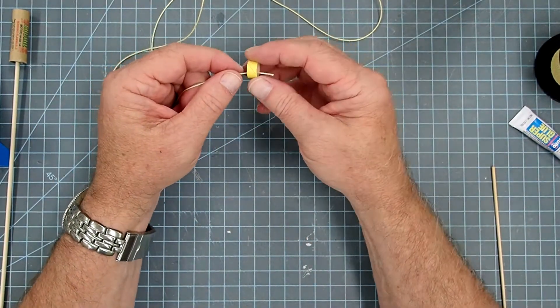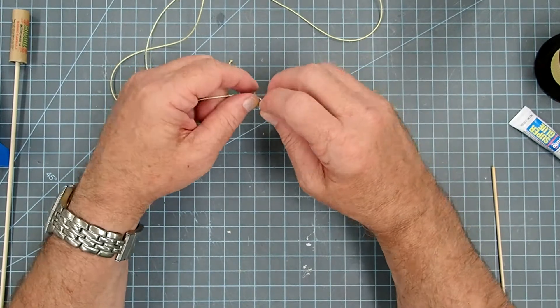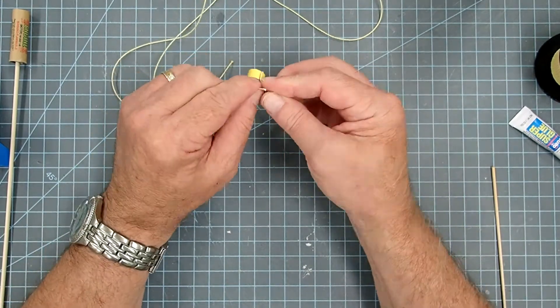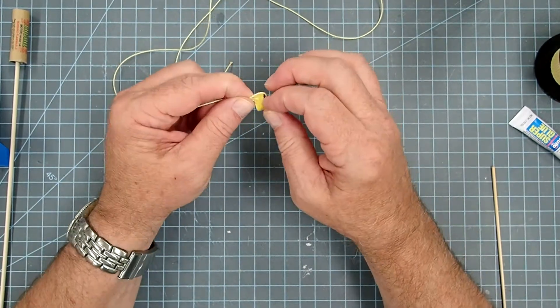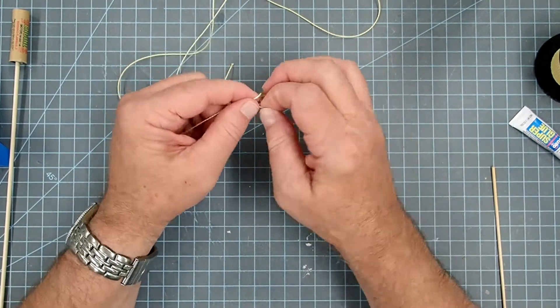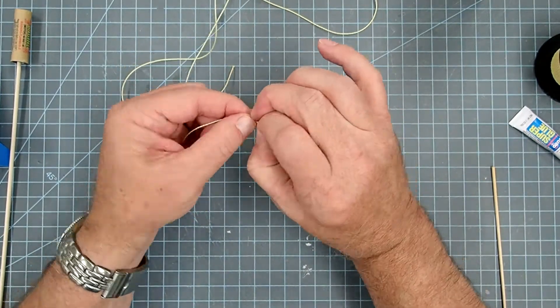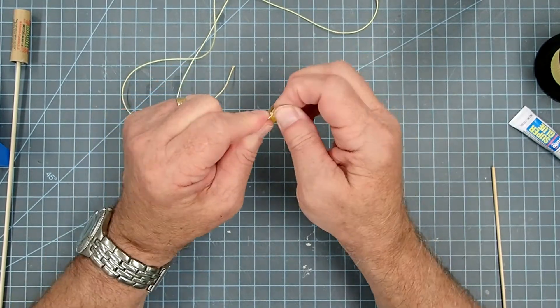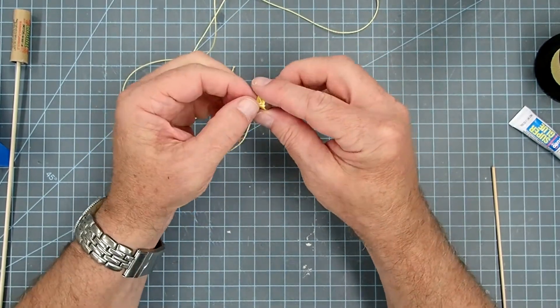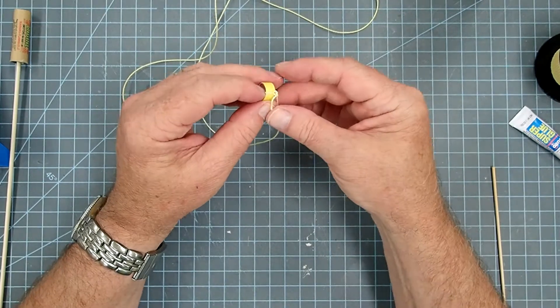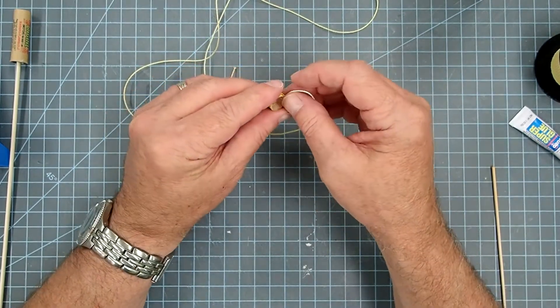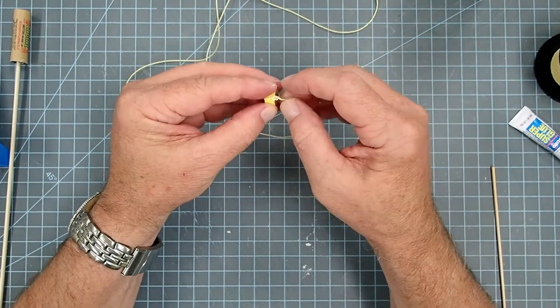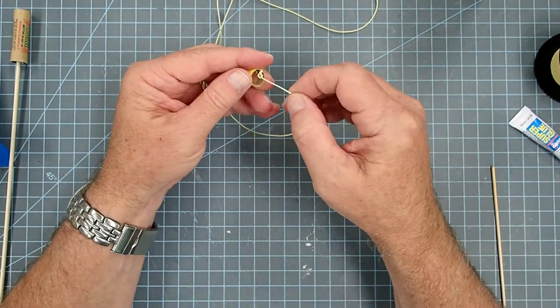I'm going to take one end of my Kevlar line here and I'm just going to tie a double knot in this. Like that. Then I'm going to pull this up. Now I want the knot to go inside the tube a little bit there, kind of like that.